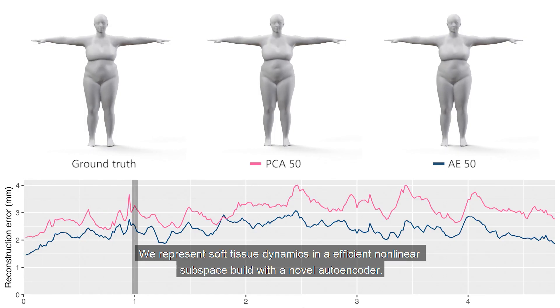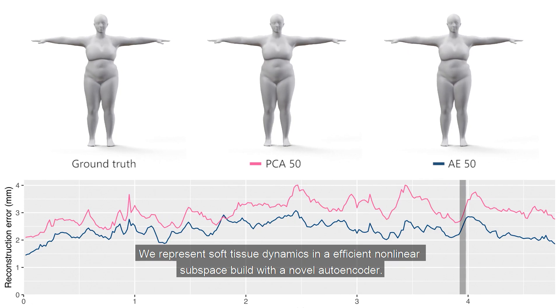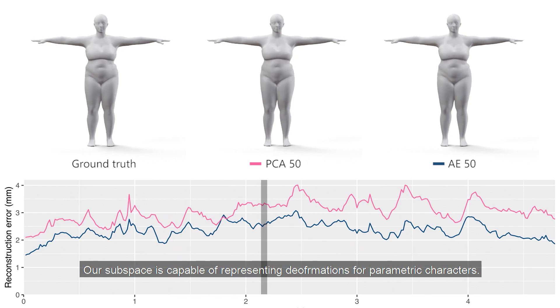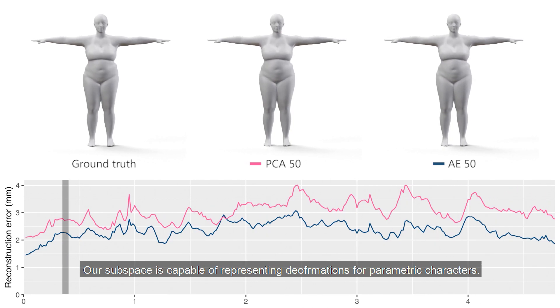We represent soft tissue dynamics in an efficient nonlinear subspace built with a novel autoencoder. Our subspace is capable of representing deformations for parametric characters.